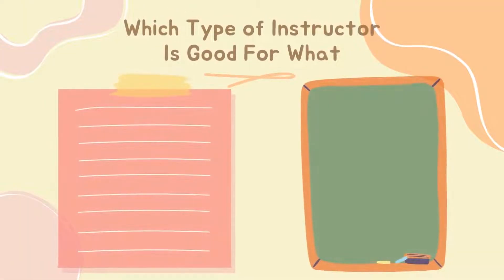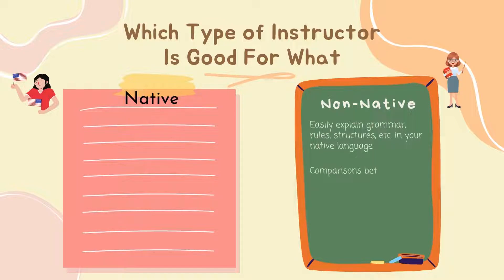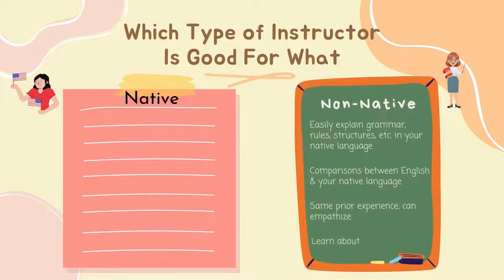So let's break this down. Which type of instructor is good for exactly what? Non-native instructor: because a non-native instructor ideally speaks your native language, they're able to explain in detail the formalities of the language in your native language for quick comprehension — such as grammar, rules, and structures. Quick comparisons can be made between English and your native language. Having walked down the same path, your non-native instructor may intuitively know your difficulties and empathize. Non-native instructors are typically better for learning about the language, such as for testing purposes, rather than learning how to communicate and be a better speaker.